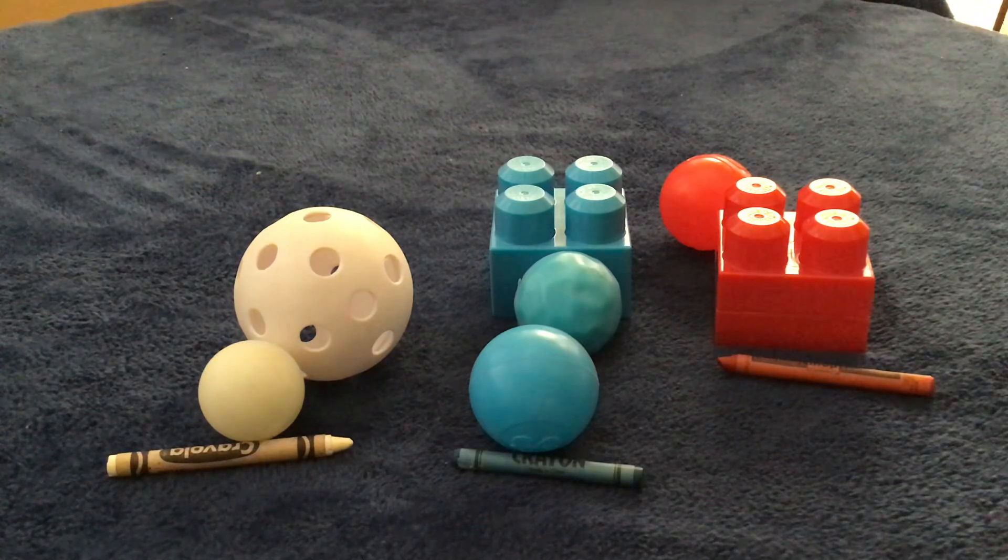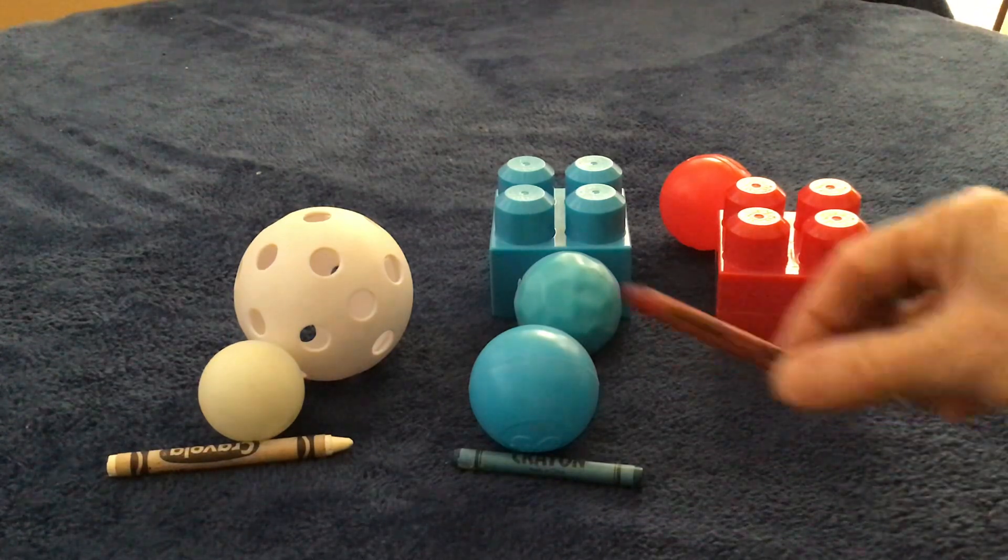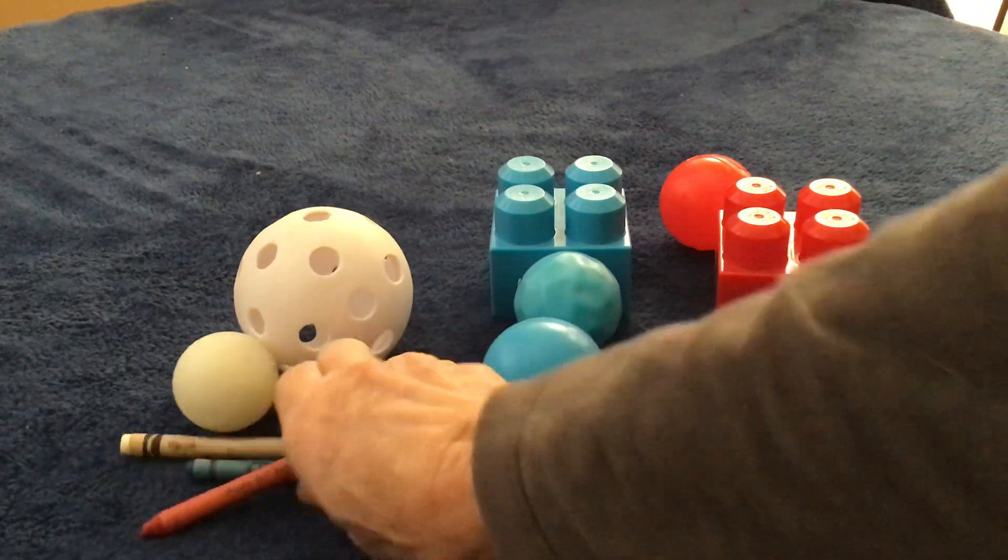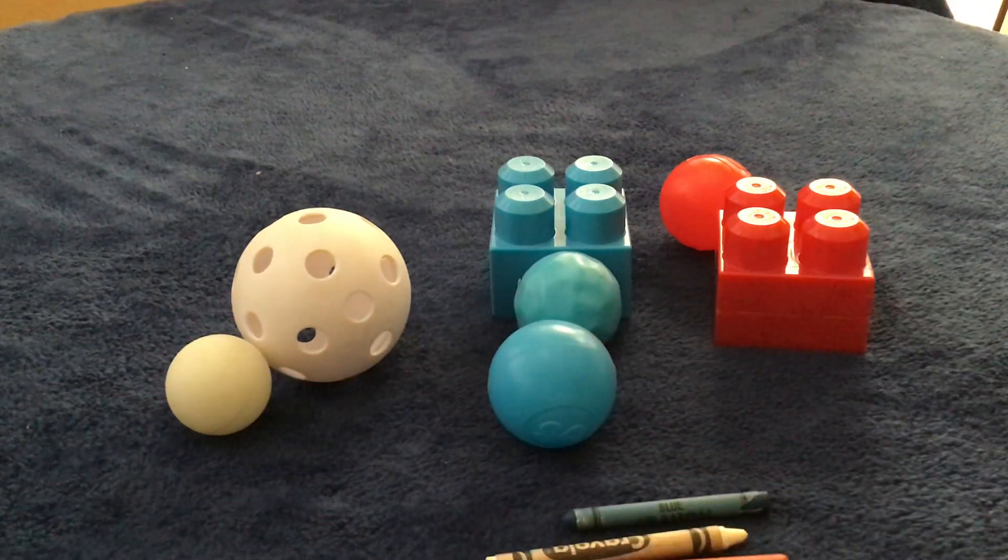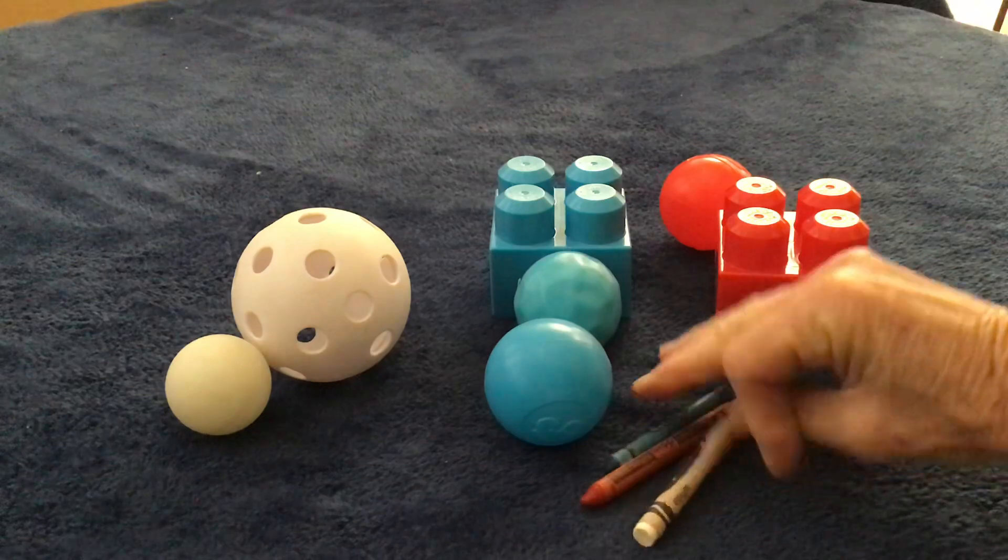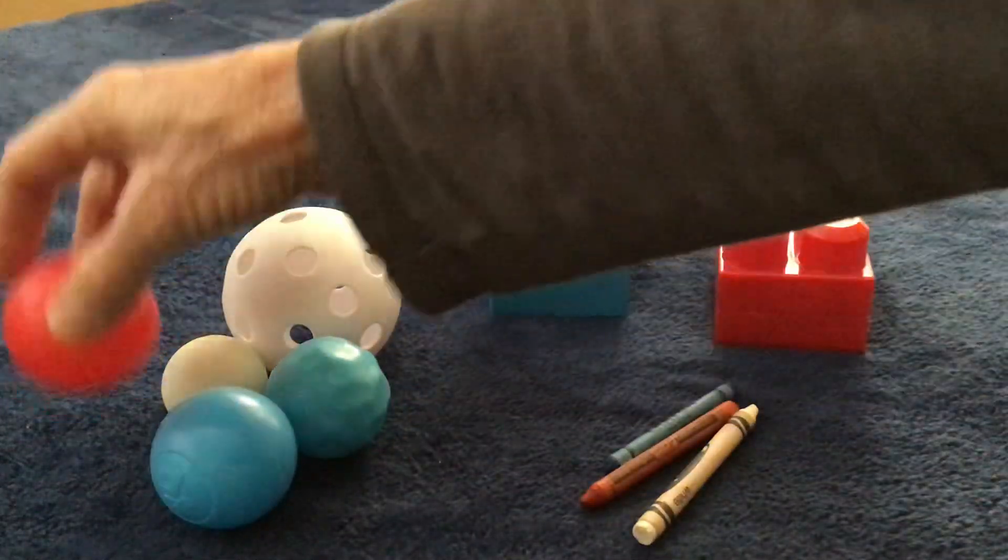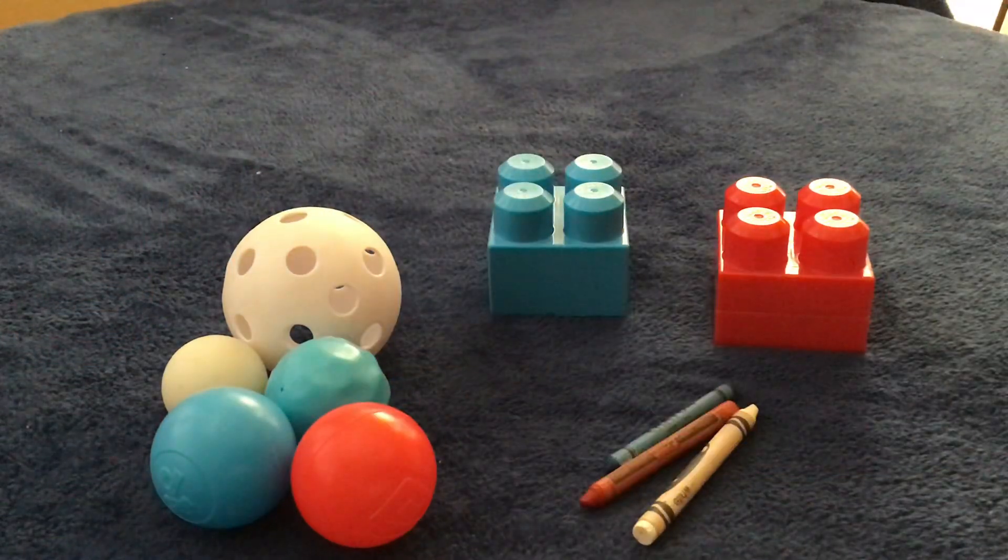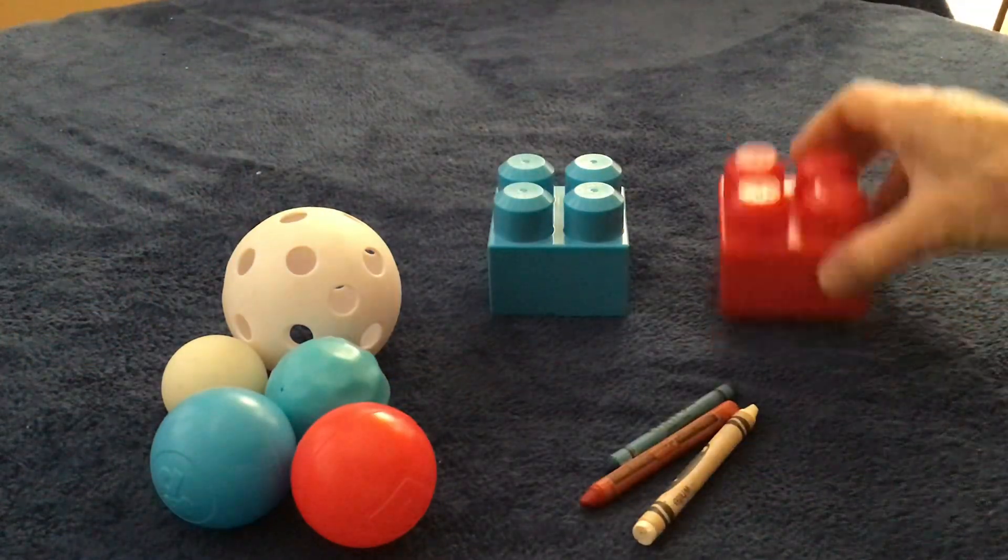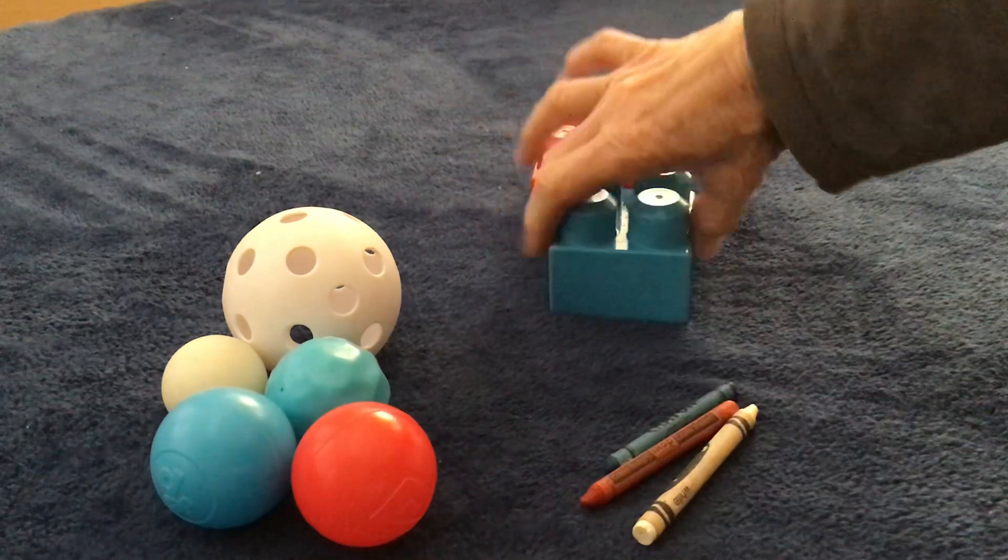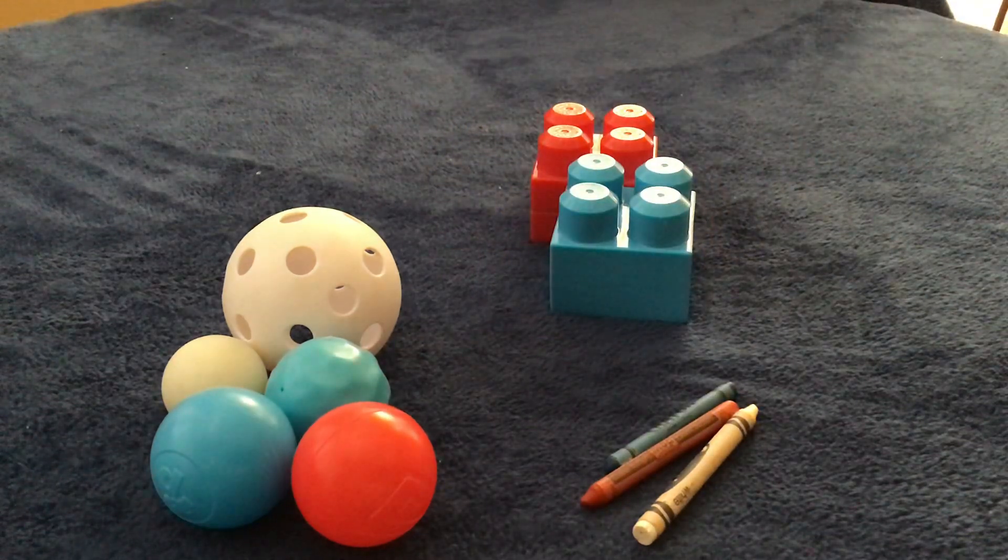So we have the shape of crayon, so those could go all together. We have the shape of balls or spheres, and those could go all together. And we have the shape of duplo blocks, so those could go all together.